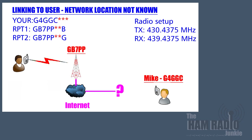A great feature of the D-Star system is that you can call another user even though you don't know where they are on the network. In this example, I call a friend of mine, Mike, G4GGC, via a repeater without knowing his location on the network. To do this, I enter his callsign with three spaces afterwards to ensure that there are eight characters. RPT1 and RPT2 remain showing the repeater I'm trying to work through.